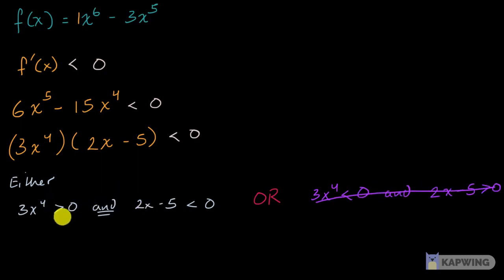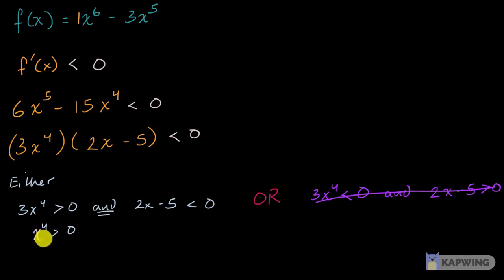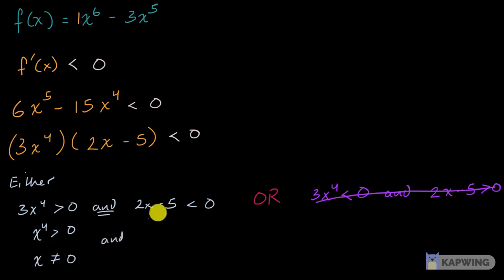So our only viable condition is: 3x⁴ greater than zero — which is true for any x not equal to zero — and (2x minus 5) less than zero. Solving the second part: add 5 to both sides to get 2x less than 5, divide both sides by 2, so x is less than 5 halves.